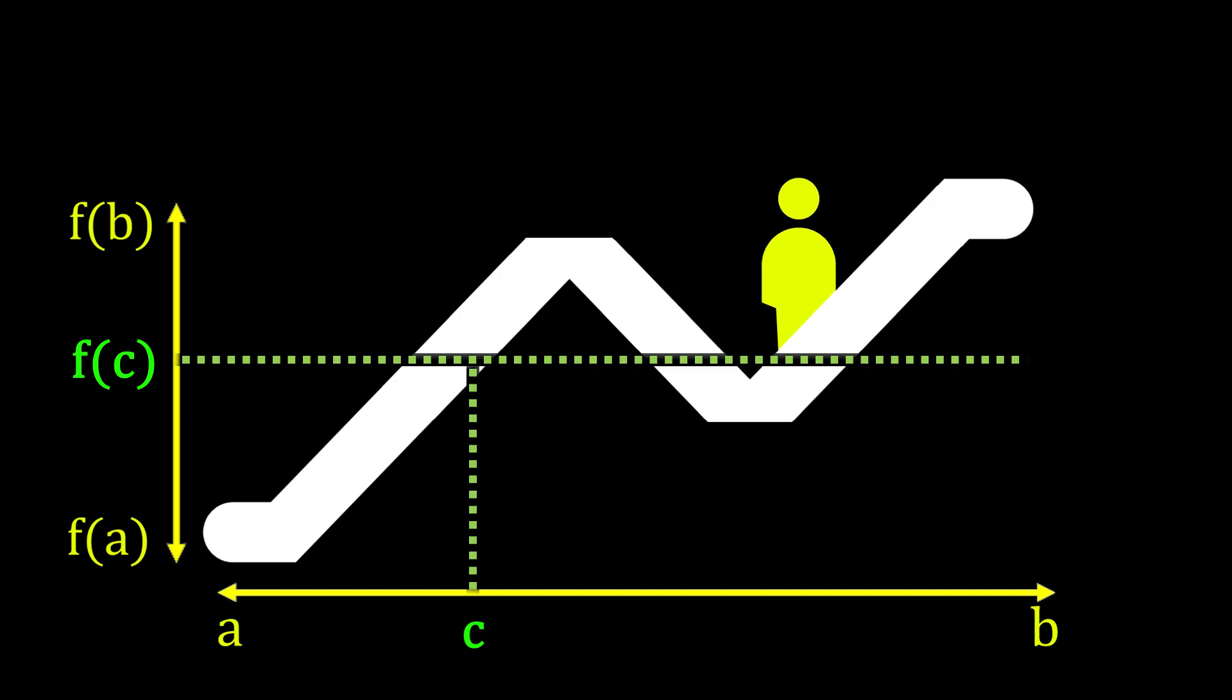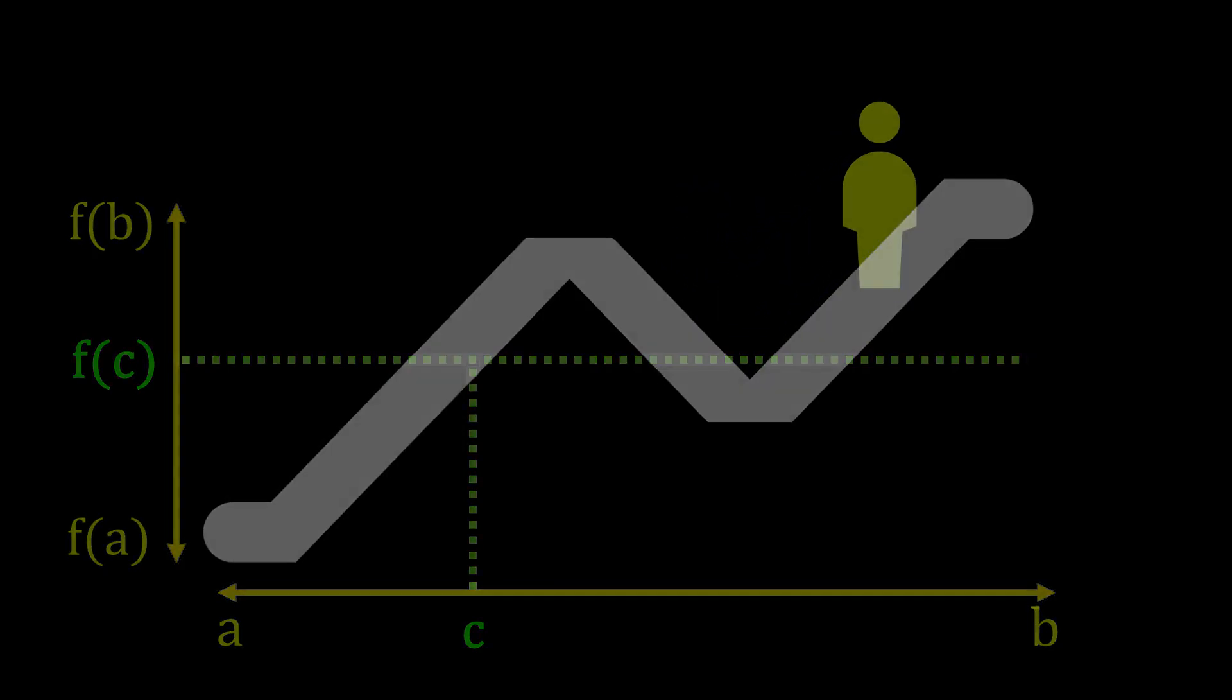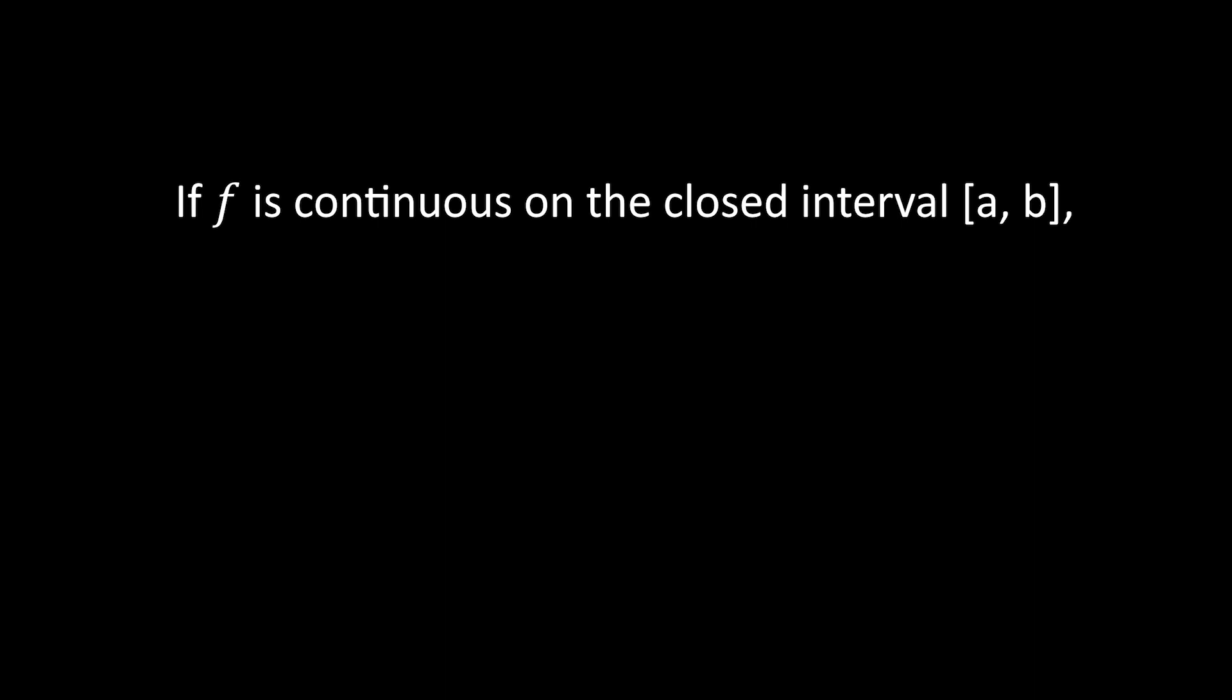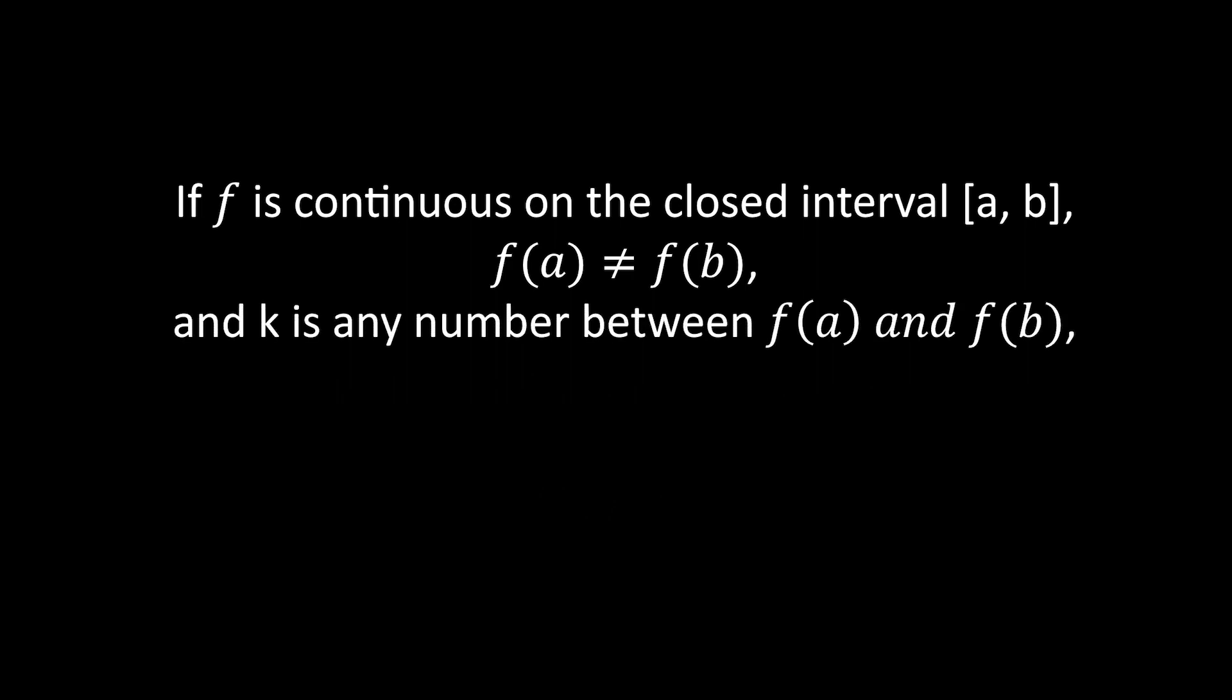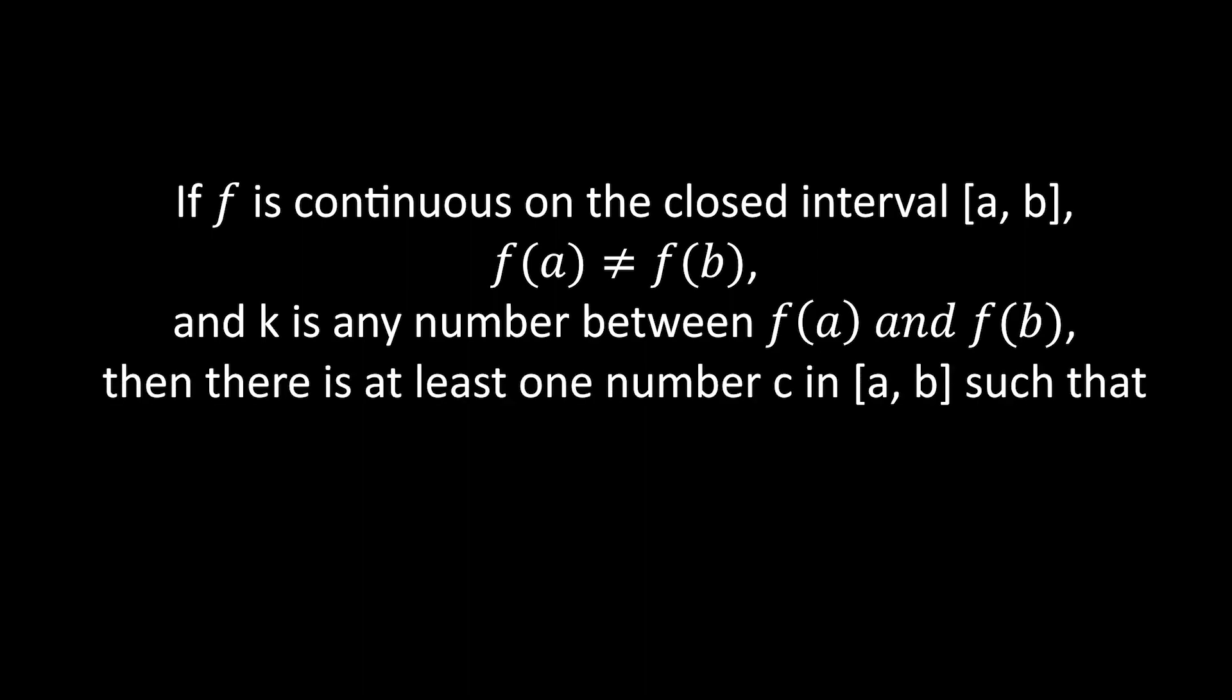Now let's summarize and write down the mathematical definition of IVT. If f is continuous on the closed interval x is in between a and b inclusive, f of a is not equal to f of b, and k is any number between f of a and f of b, then there is at least one number c in the interval x is greater than or equals a or less than or equals b, such that f of c is k.